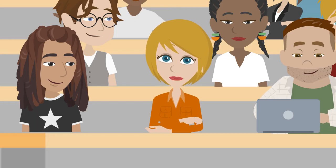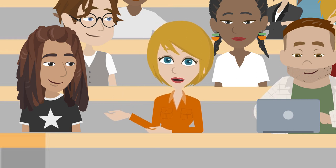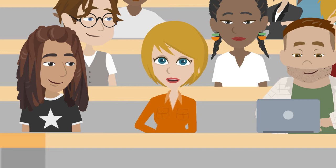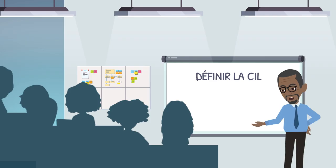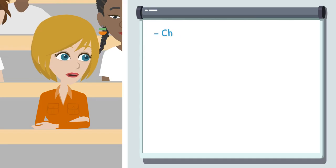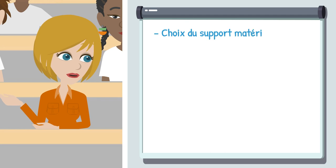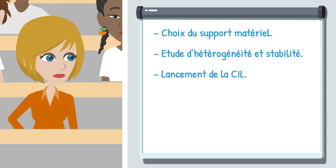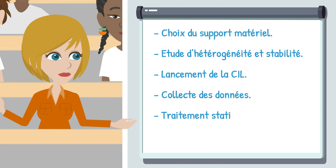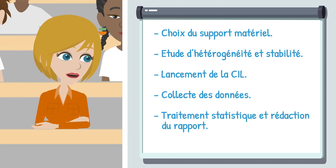As with any measurement method, there is a procedure that needs to be followed in a precise order with a logical succession of operations implemented during execution. First, we need to define the interlaboratory comparison, its purpose and its measurands. We then select the material and study its heterogeneity and stability. Next, we physically organize the comparison. The following step is to assess the data collected on a probabilistic model basis. And finally, we deliver a report to the participants.